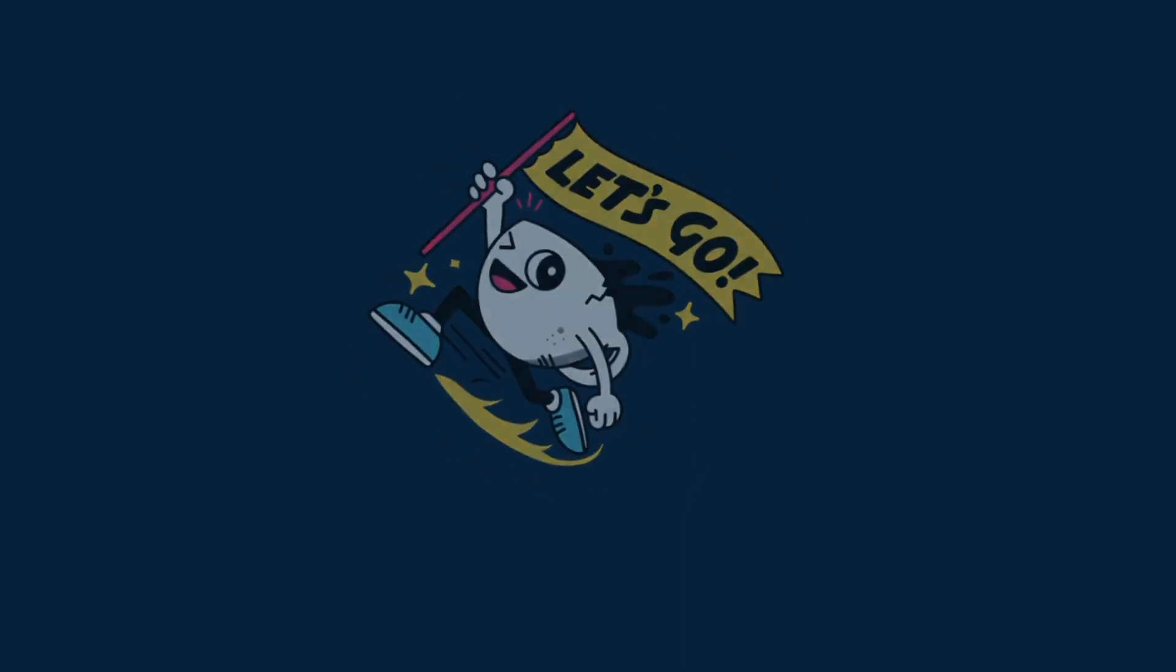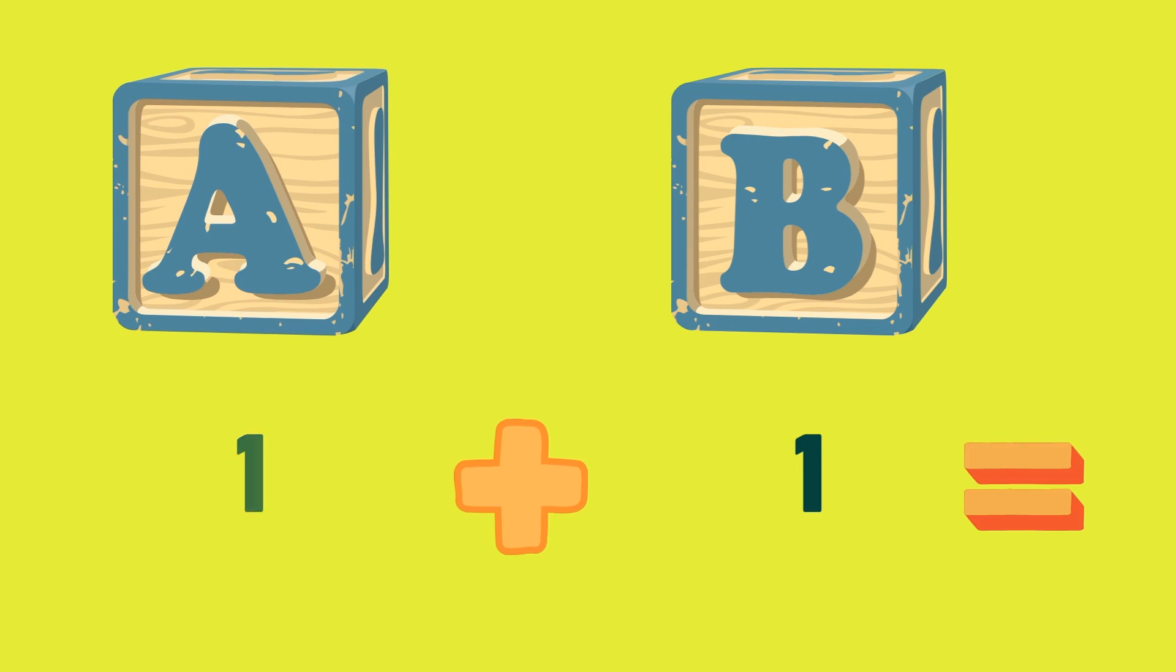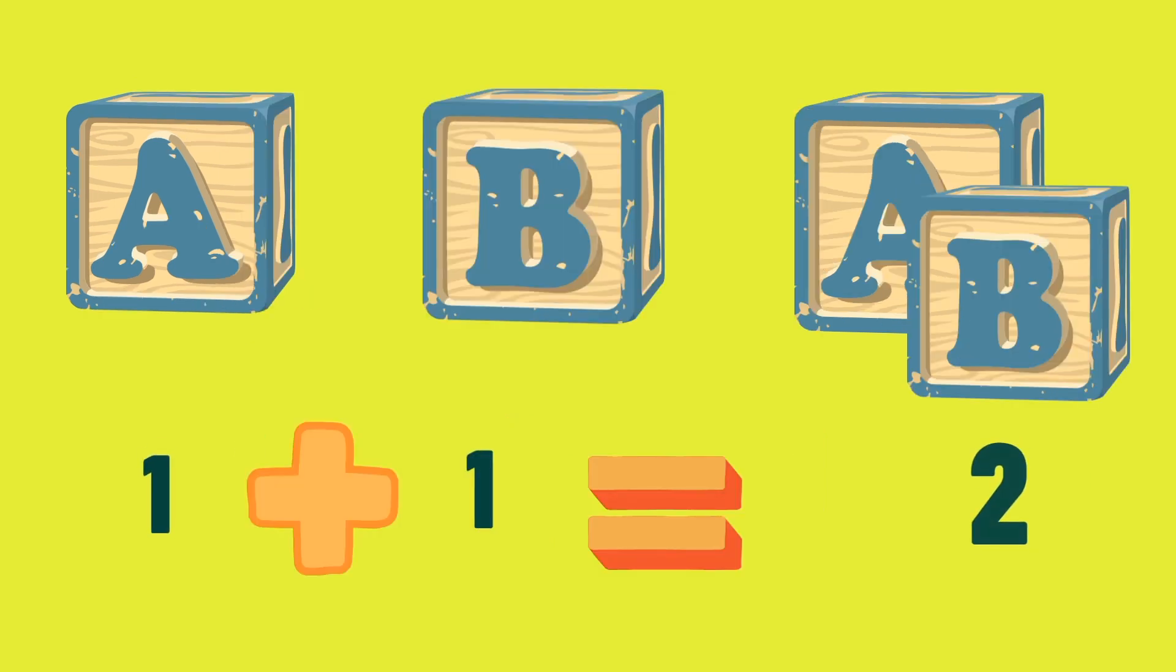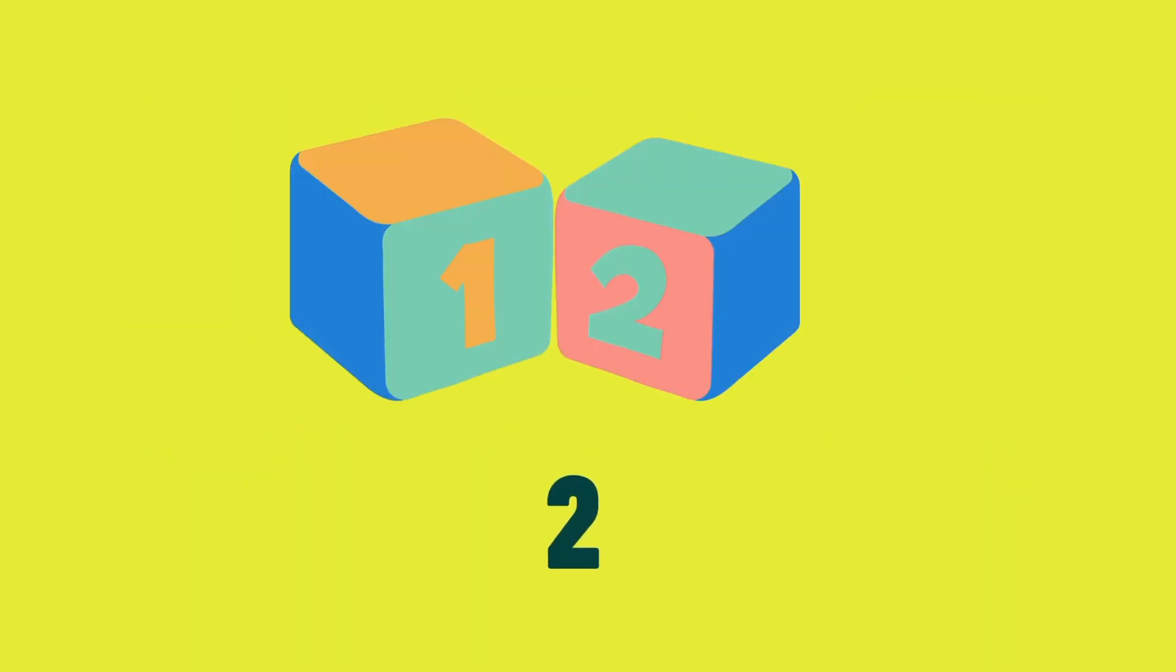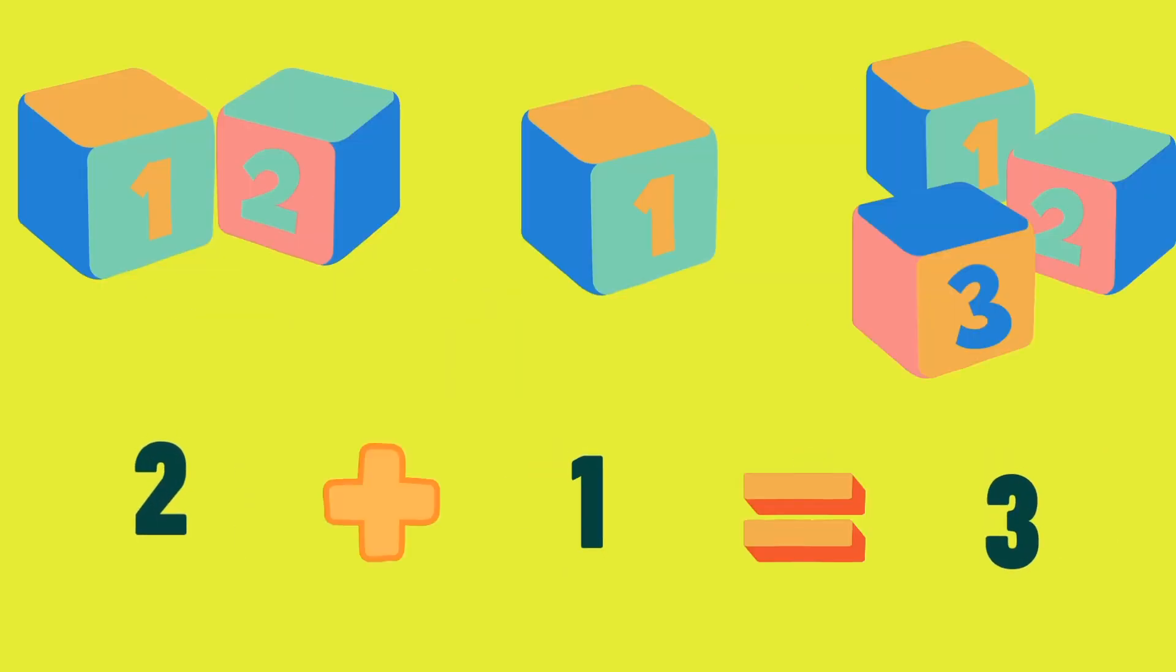So let's get started. 1 block plus 1 equals 2 blocks. 2 blocks plus 1 block is 3 blocks.